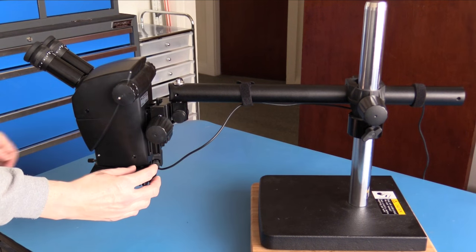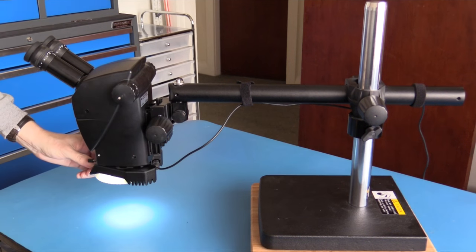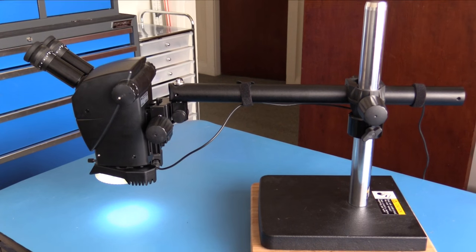The microscope comes with a ring lamp with 10 levels of brightness adjustment. The color temperature of the LEDs is 5600 Kelvin. Leica have rated the working life of these LEDs at 50,000 hours.